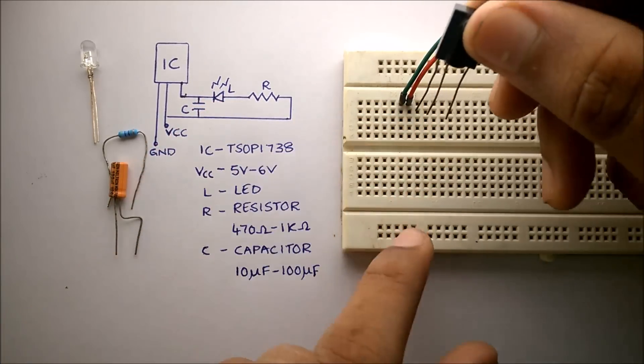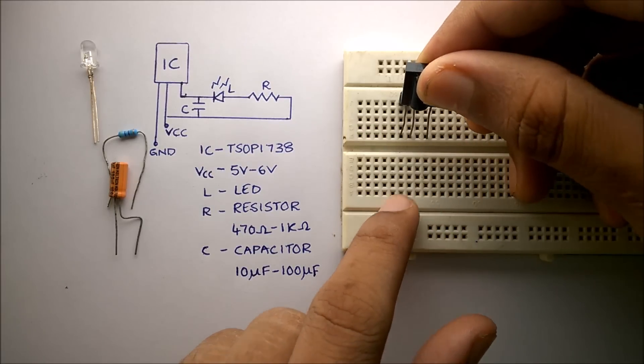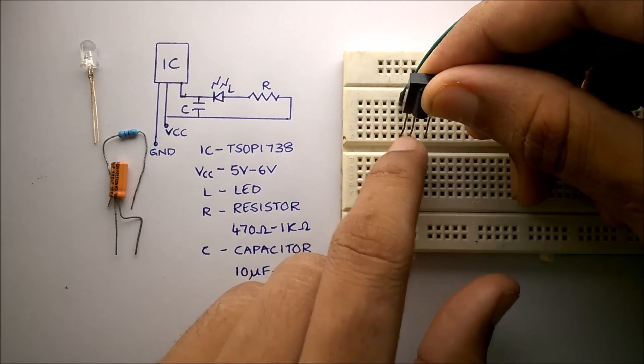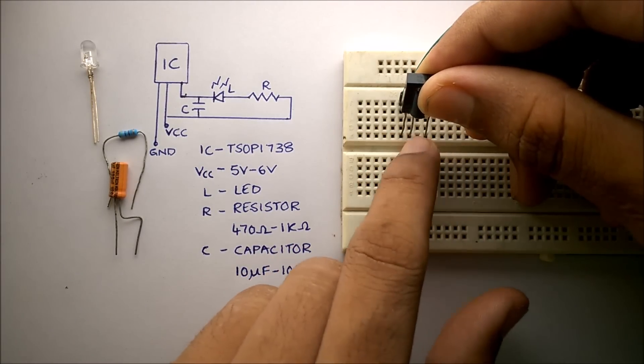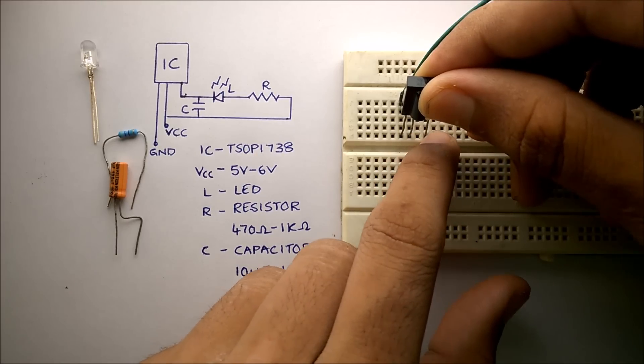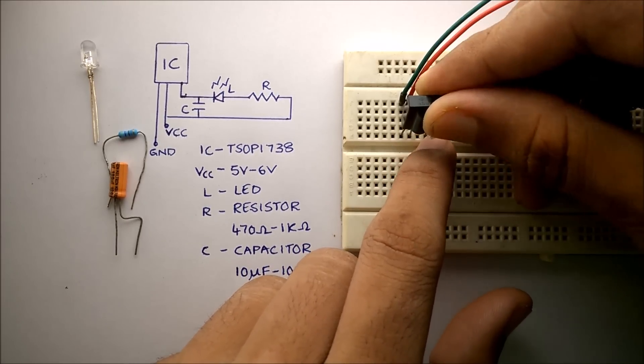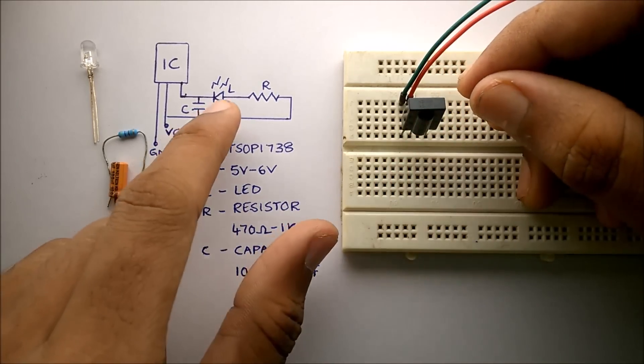Now we will place this in this position. We have connected the ground, VCC which is 5 volts, and the output pin comes here. This output pin has to be connected to the negative terminal of the LED.